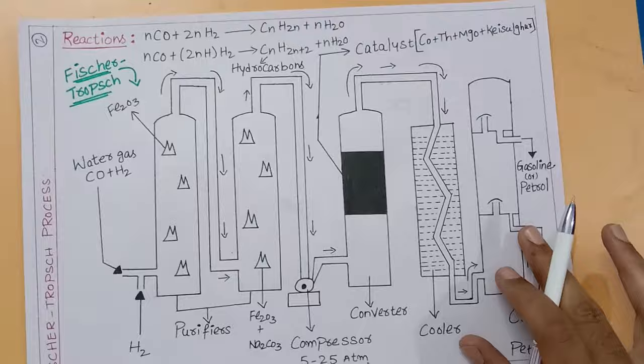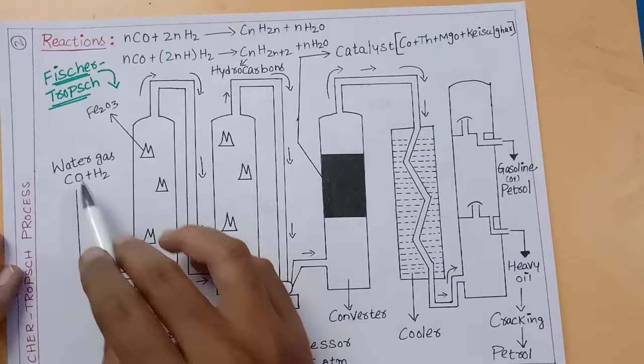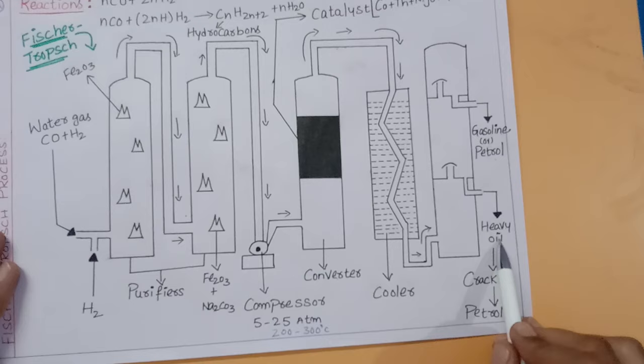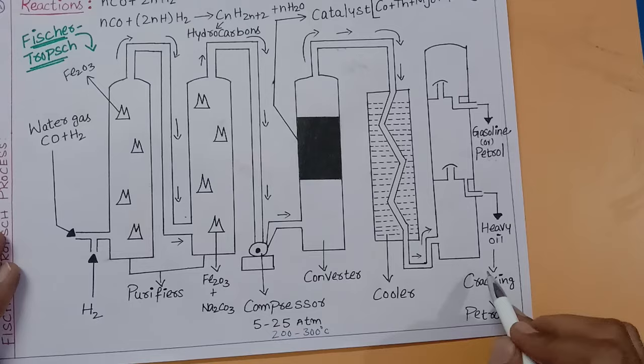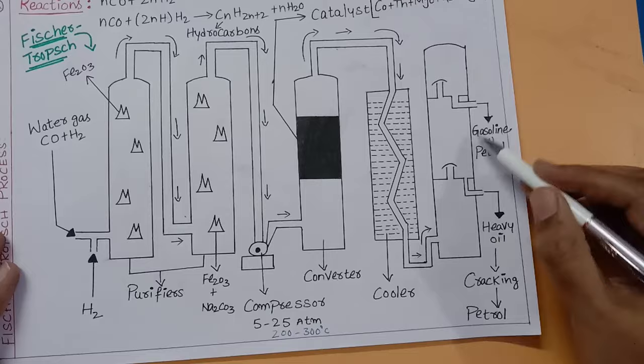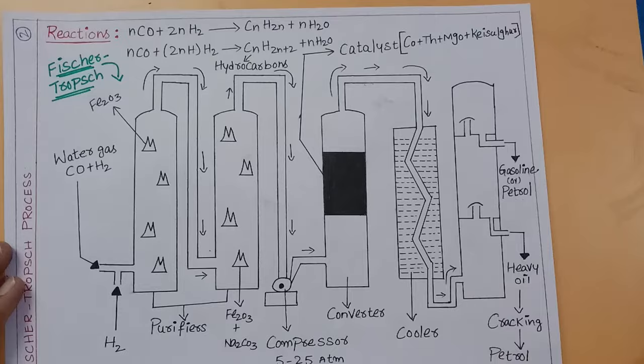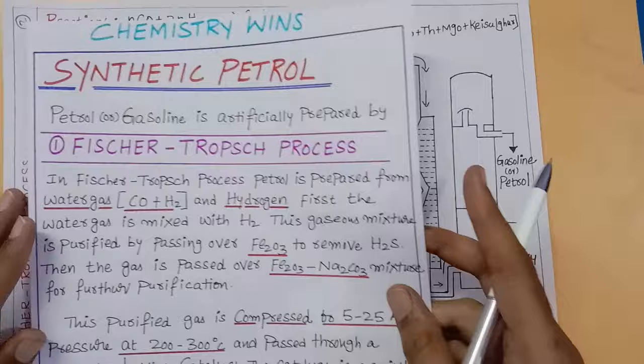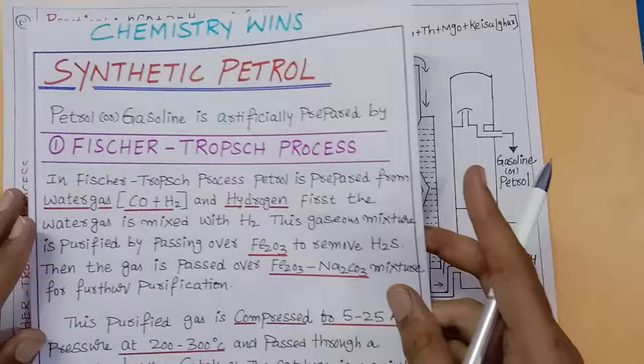In the Fischer-Tropsch process, we use water gas and hydrogen to get petrol. At the same time, we get heavy oil. This heavy oil undergoes cracking. Cracking of heavy oil is important. In the next video, we are going to deal with the Bergius process, which is also very important for exams. That is about this video students. Thank you for watching.